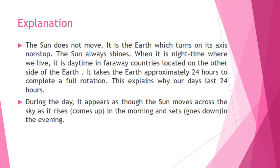Explanation: The sun does not move. It is the Earth which turns on its axis non-stop. The sun always shines. When it is night time where we live, it is day time in far away countries located on the other side of the Earth. It takes the Earth approximately 24 hours to complete a full rotation — this explains why our days last 24 hours. During the day, it appears as though the sun moves across the sky as it rises in the morning and sets in the evening.